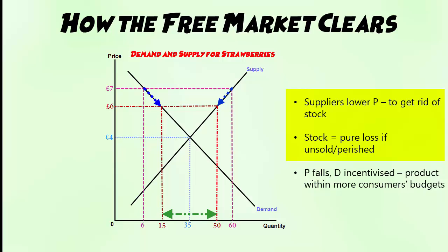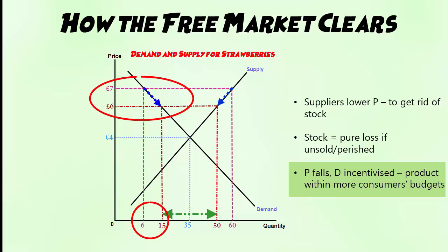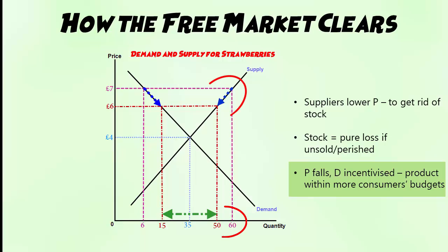So suppliers are going to lower their prices in order to get rid of this stock. By lowering their prices, that causes an expansion of demand because the product falls within a greater number of consumers' and households' budgets, and more people can afford it. Supply will also contract because some stock has been sold and suppliers have stopped producing at that level, knowing they can't sell that much.